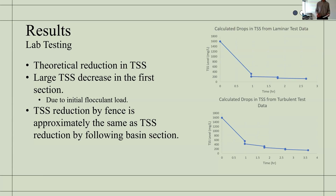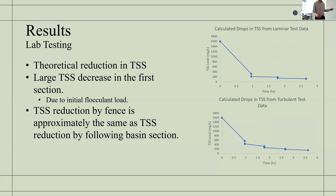Both graphs also show multiple vertical drops in TSS. This is where the runoff has theoretically come in contact with a geotextile filtration fence, which has removed the suspended solids and decreased the TSS. This shows that geotextile filtration fences do theoretically have the capability of removing significant amounts of suspended solids from sediment-laden stormwater runoff.